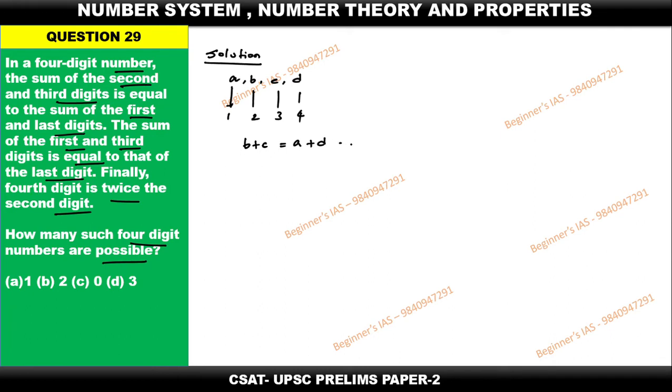This is one equation. Then according to the second statement, the sum of the first and third, which means A plus C, is equal to the fourth, which means last, that is D. I am just taking this as second equation.